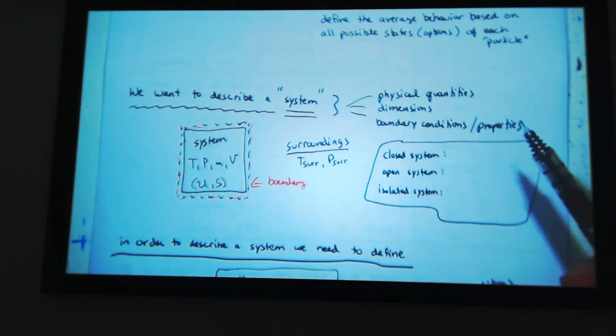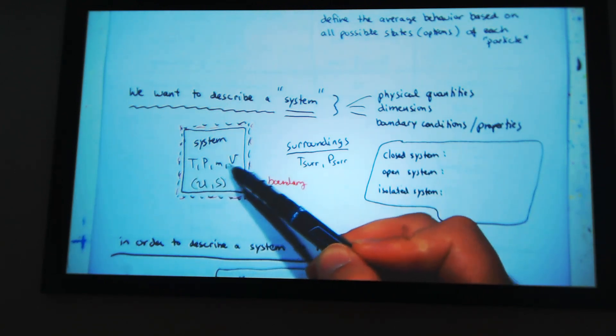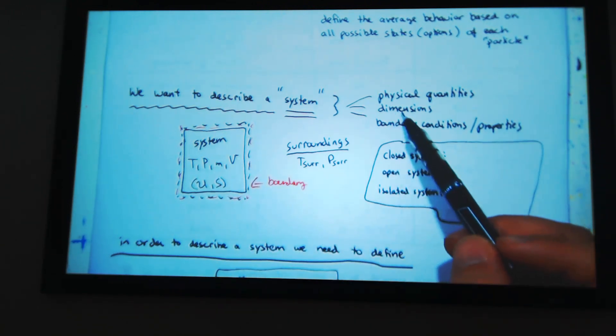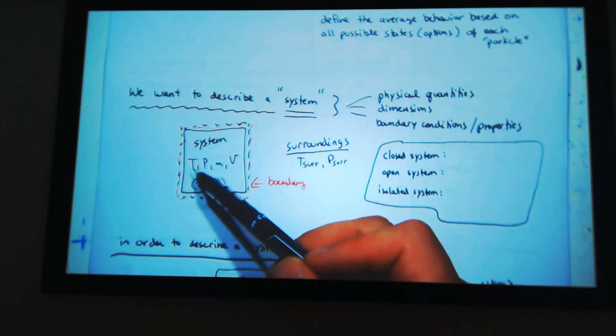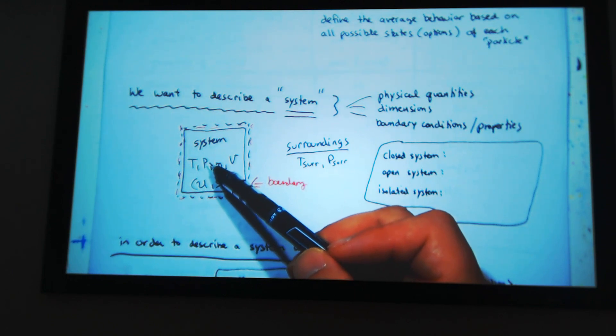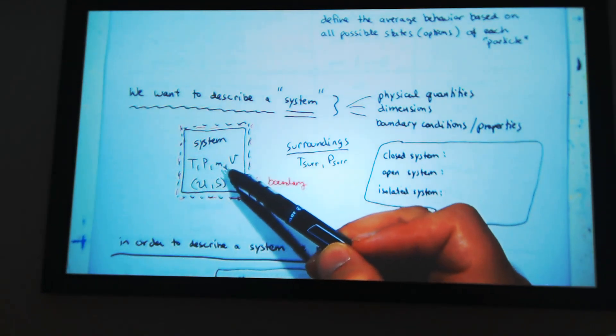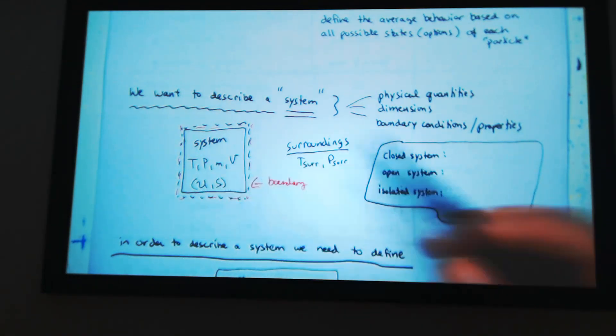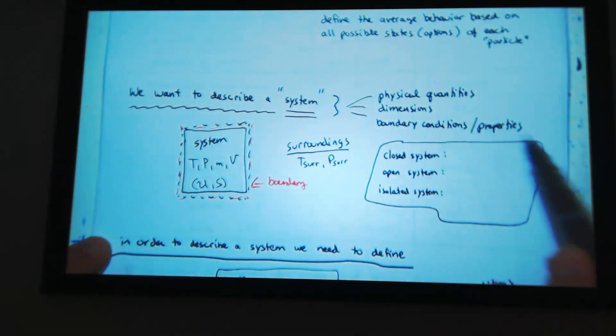So if we describe a system, we need physical quantities. What are our physical quantities? Temperature, pressure, mass, volume. We need dimensions. So temperature has a dimension, Kelvin. Pressure has a dimension, atmospheres or kilopascal. Mass has a dimension, kilograms or label mass. We have boundary conditions and properties.